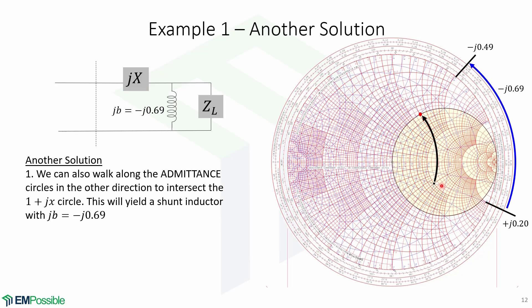In the first solution, we walked in the positive direction of the admittance circle, which was downwards. We can also walk the admittance circle in the negative direction — which in this case is upwards — to intersect the 1 + jx circle. Looking at the admittance here and the admittance here, this means that the element is going to be a shunt inductor of value −j0.69.